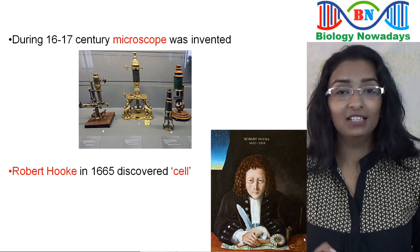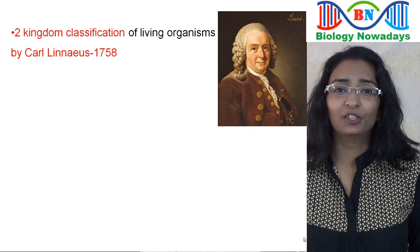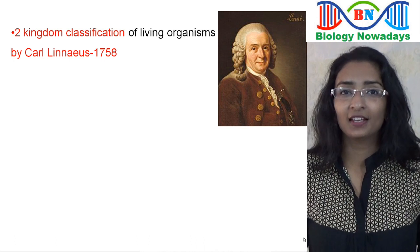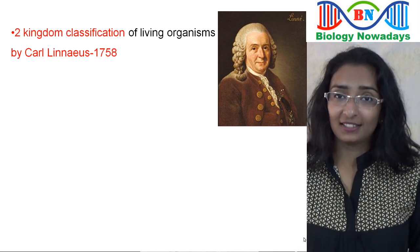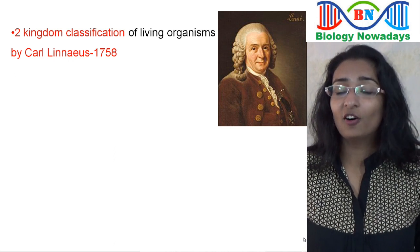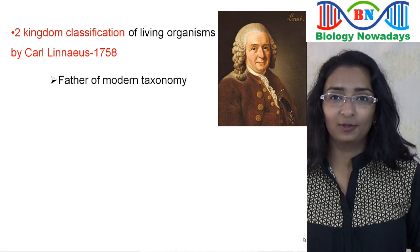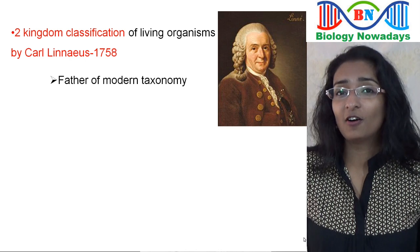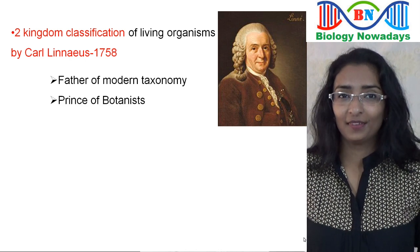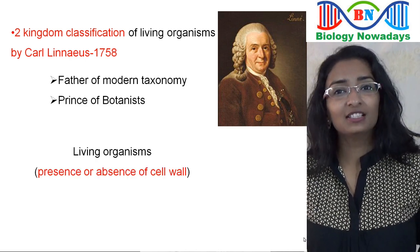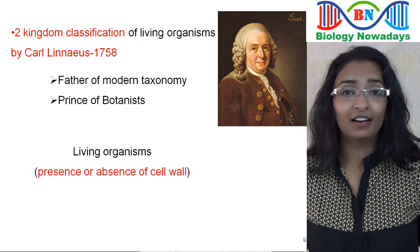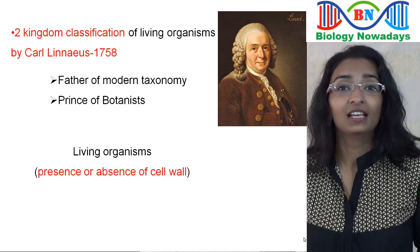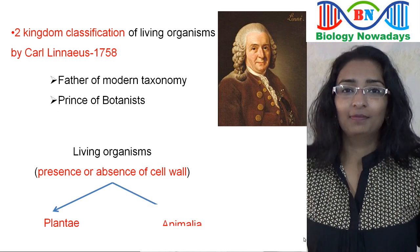In 1758, Carl Linnaeus introduced a two-kingdom classification of living organisms. This Swedish scientist is considered to be the father of modern taxonomy. He was such a great botanist that he was called the prince of botanists. On the basis of the presence or absence of a cell wall, he divided living organisms into two kingdoms: kingdom Plantae and kingdom Animalia.